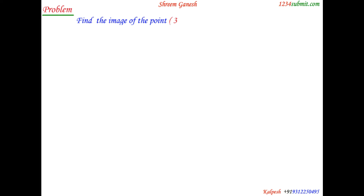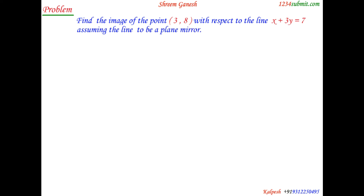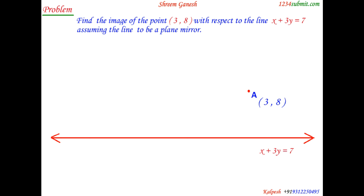Find the image of the point (3, 8) with respect to the line x + 3y = 7.